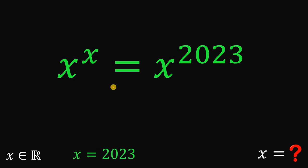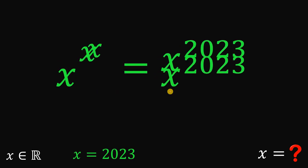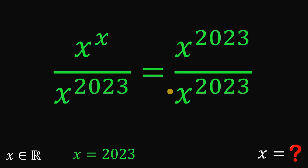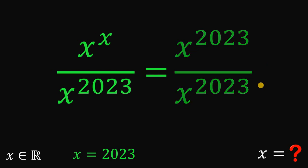Let's focus on the equation x raised to the power of x equals x raised to 2023. What we're going to do is divide both sides by x raised to 2023. On the right-hand side, x raised to 2023 over x raised to 2023 cancels out, so the right-hand side is just equal to 1.